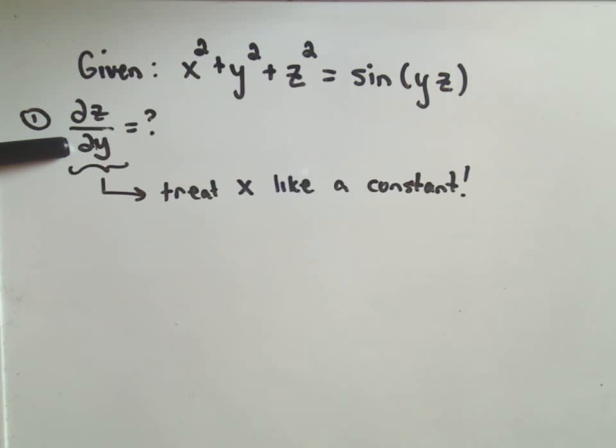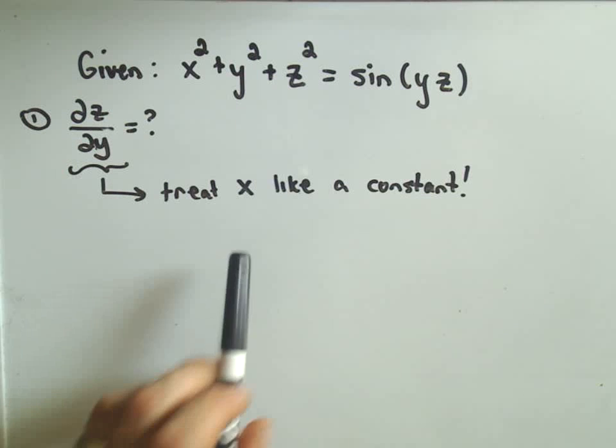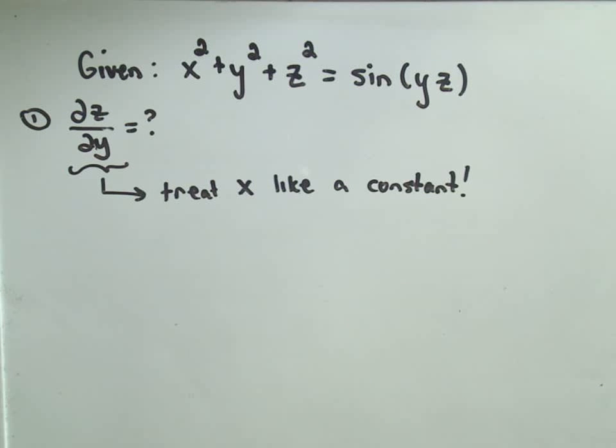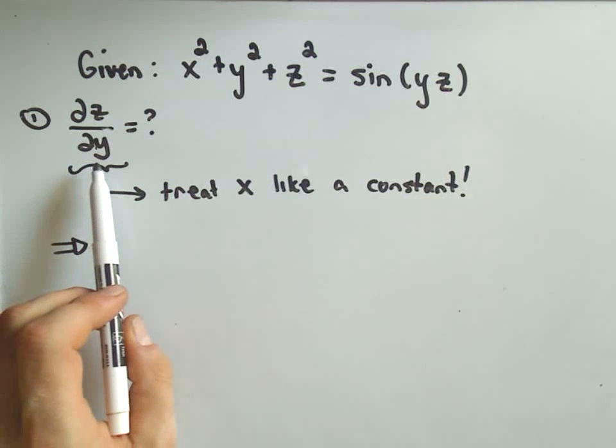So now let's find the partial of z with respect to y. The idea is the same, only now we will simply be treating x like a constant. When we go to take our derivatives, we're taking the partial with respect to y.